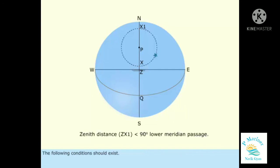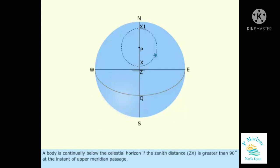The following conditions should exist. A body is continually below the celestial horizon if the zenith distance ZX is greater than 90 degrees at the instant of upper meridian passage.